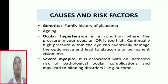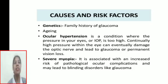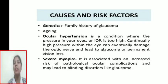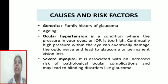Now, causes and risk factors of glaucoma. Number one is genetics — a family history of glaucoma — and ageing. Ocular hypertension is a condition where the IOP is too high. Continuously high pressure within the eye can eventually damage the optic nerve and leads to glaucoma or permanent vision loss. Severe myopia is associated with an increased risk of pathological ocular complications and may lead to blinding disorders like glaucoma.